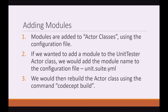Adding modules: modules are added to actor classes using the configuration file. If we wanted to add a module to the unit tester actor class, we would add the module name to the configuration file — the unit.suite.yaml. We would then rebuild the actor class using the command 'codecept build'. Remember, actor classes are generated classes and they use the suite.yaml files, so all you need to do is edit that file and then rebuild it.